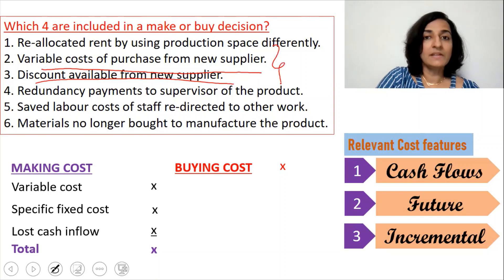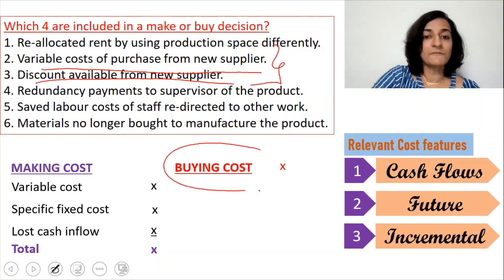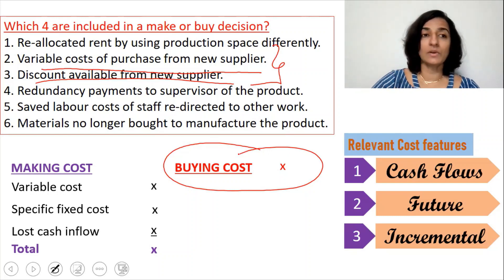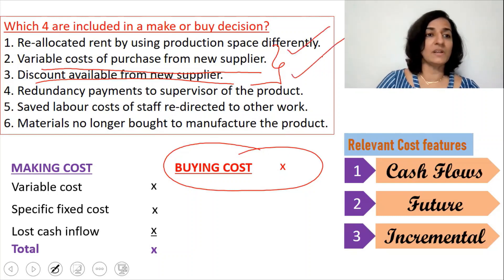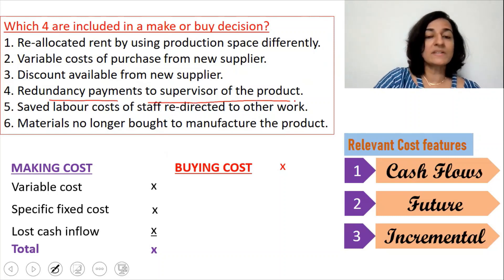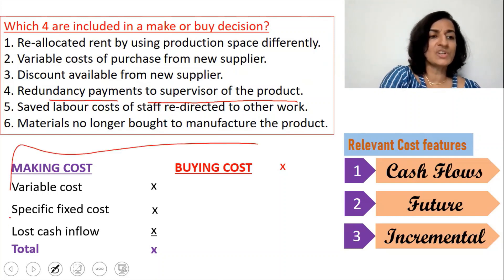Moving to the second and third items: variable cost of purchase from the new supplier and the discounts available from the new supplier. These two items directly affect the buying cost, so they should definitely both be included.